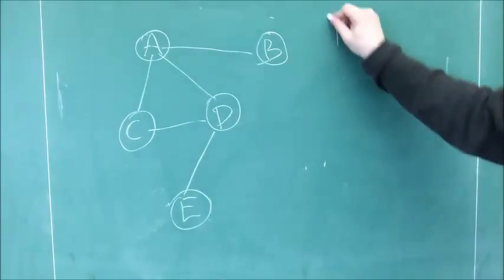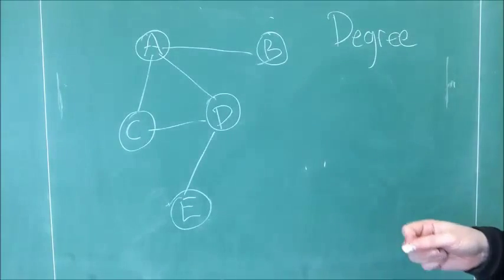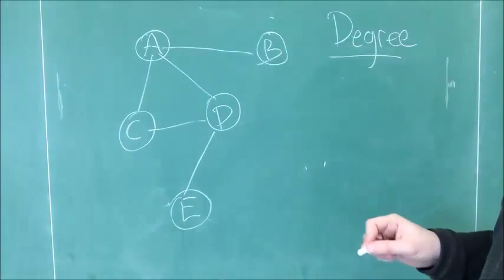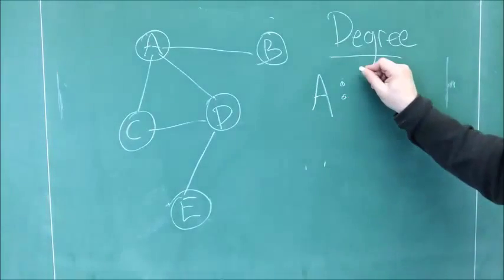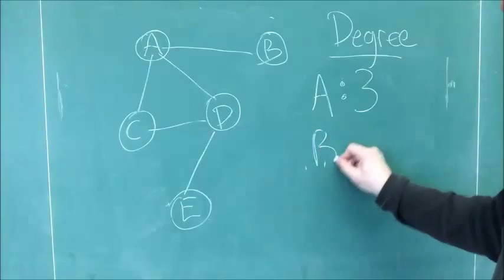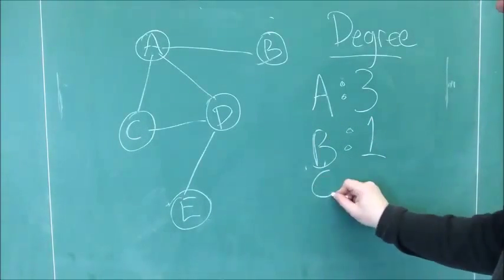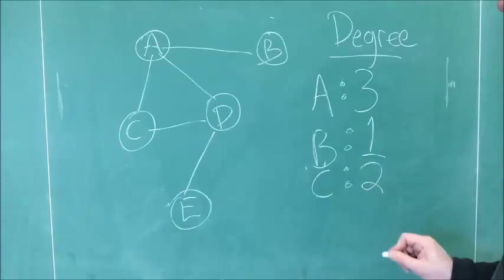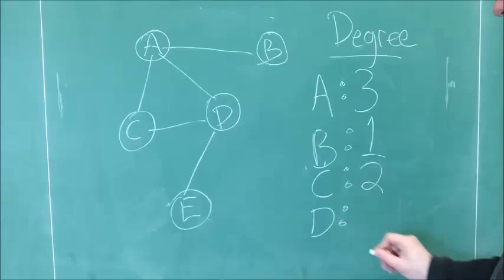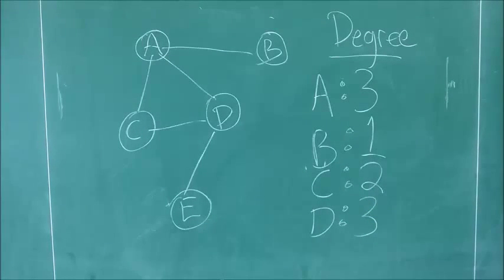One of the things that we can calculate is called degree. Degree is defined simply as the number of ties associated with a node. For A, you literally just count the ties that touch A, and that's 3. For B, there's just one tie, so the degree of B is 1. For C, that's 2, and we could calculate for D a degree of 3. E finally has a degree of 1.